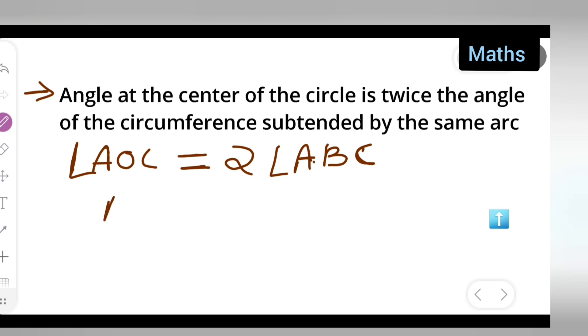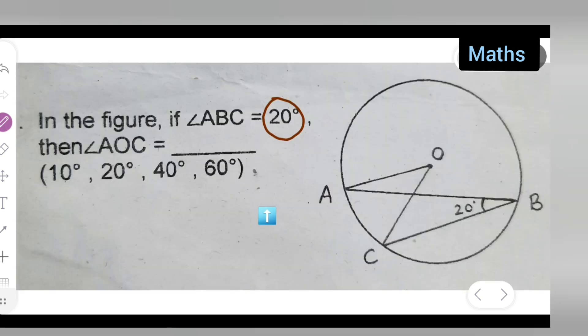Here you can write down that. Here what is given to you? You can write down angle - we need to find the angle AOC. We need to find this angle AOC. AOC is not given, so you write down AOC as it is.